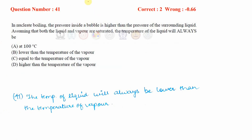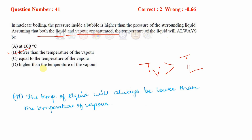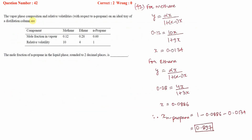In nucleate boiling, the pressure inside a bubble is higher than the surrounding liquid. Assuming both liquid and vapor are saturated, nucleate boiling occurs when the temperature of vapor is greater than the temperature of liquid. Therefore, the correct statement is that the temperature of the liquid is lower than the temperature of the vapor.